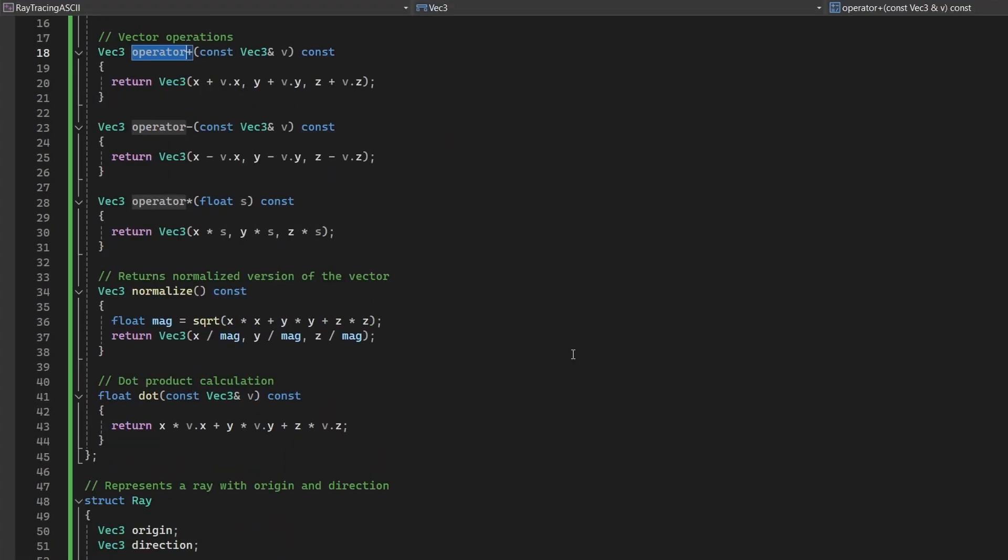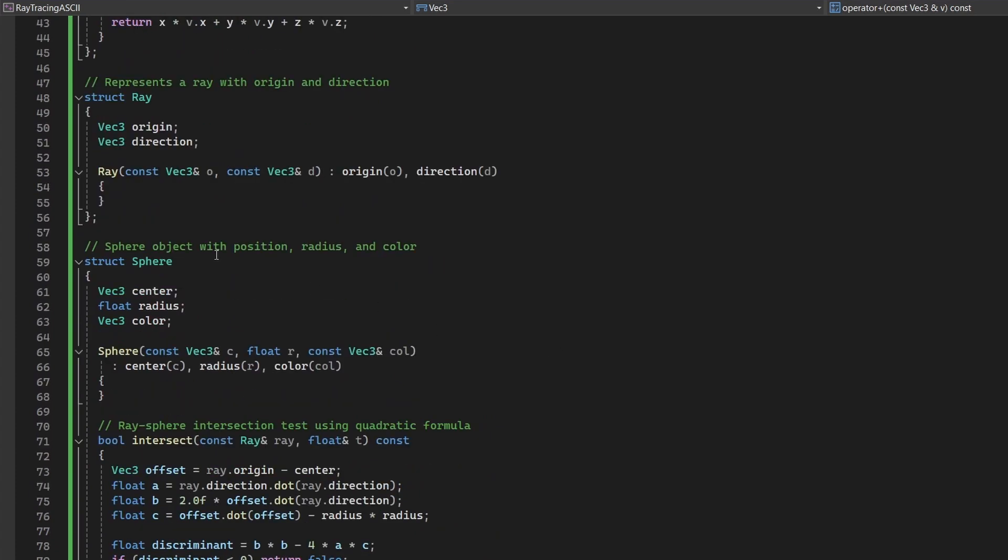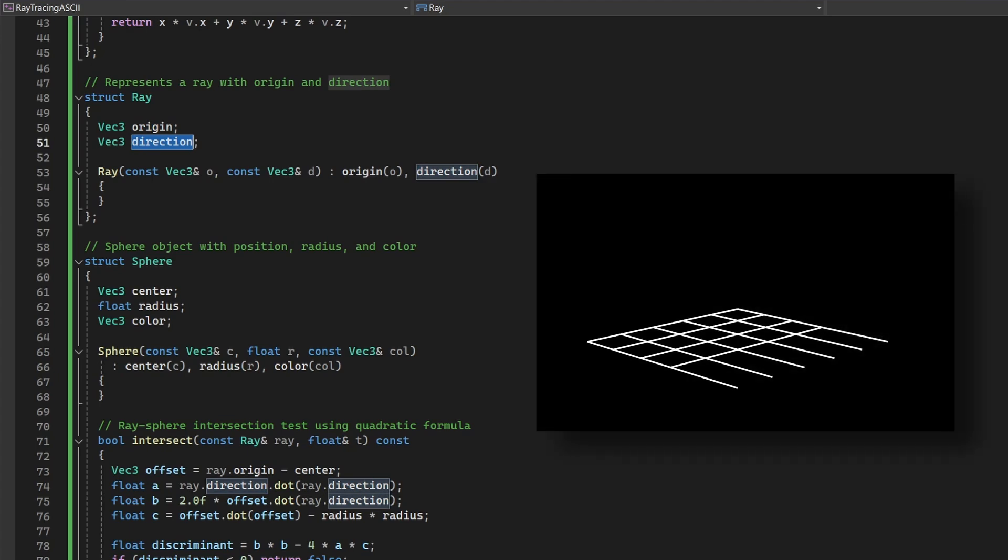The ray structure encapsulates the concept of a ray in 3D space. It consists of two components: an origin point and a directional vector. Rays are central to ray tracing as they are cast from the camera into the scene to determine what objects are visible at each pixel.